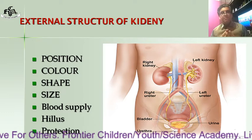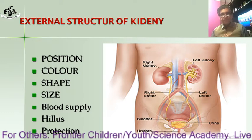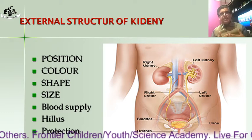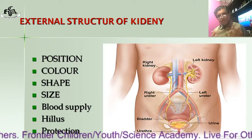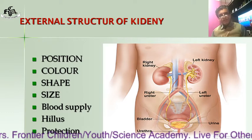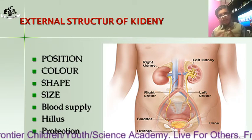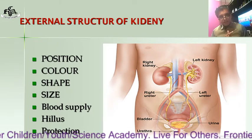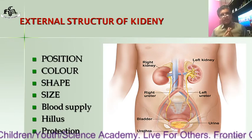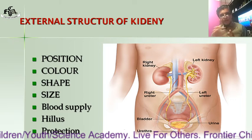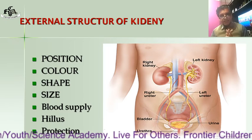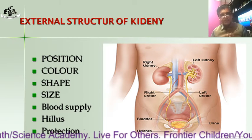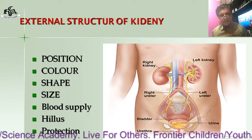The color of the kidney is reddish brown, like the color of a bean, and the shape is also like a bean. The average size of a kidney: its length is 12 centimeters, its width is 6 centimeters, and its thickness is 3 centimeters.